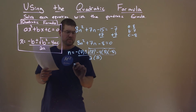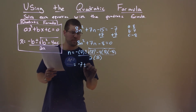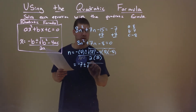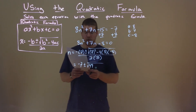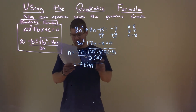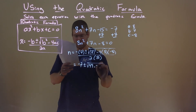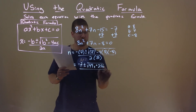So let's go simplify this. Minus 7 stays there, plus or minus. Take our time here. 7 squared is 49. What's 4 times 8 times negative 8? That's negative 256. And minus a negative is adding a positive. 2 times 8 is 16.